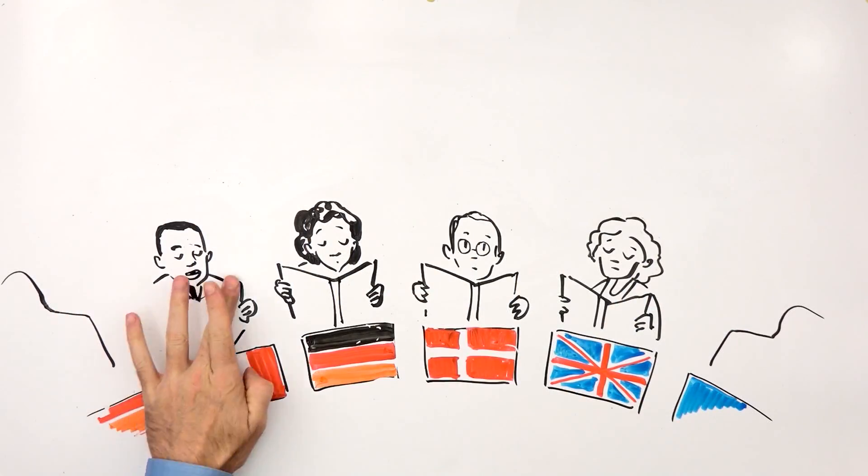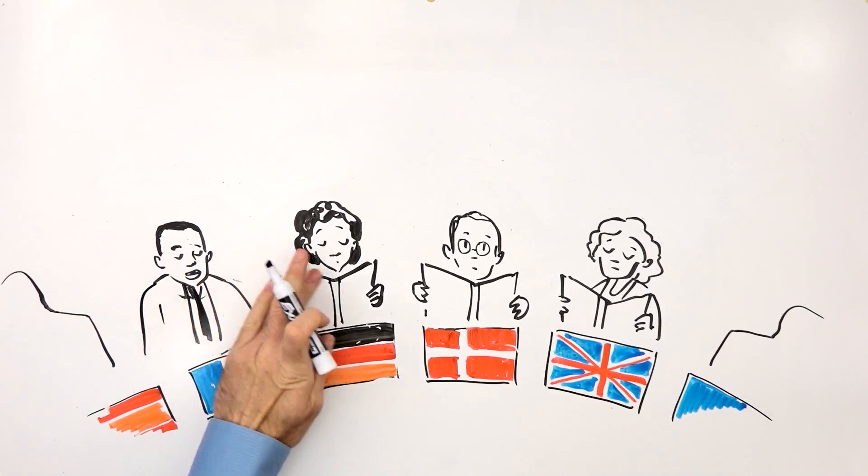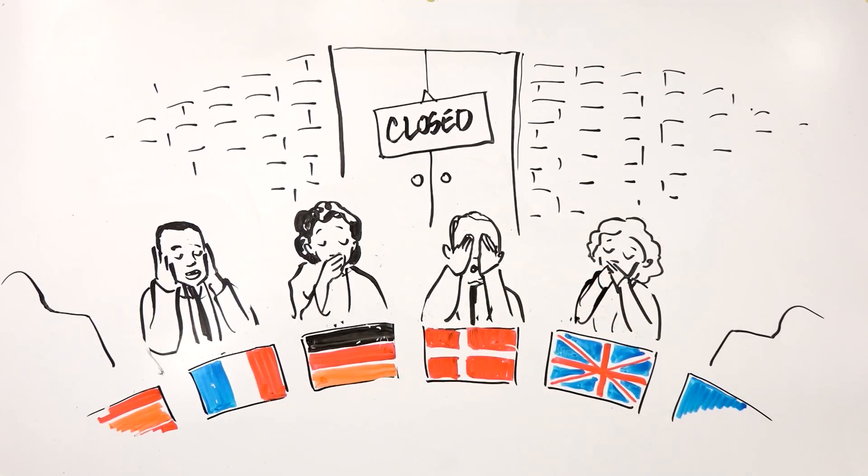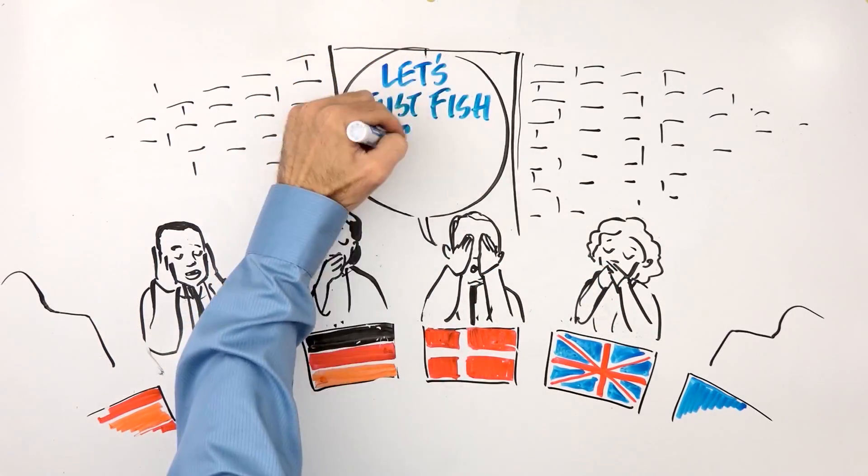While the law changed, ministers have been continuing to ignore the scientists' advice and setting quotas above advised limits, slowing down progress to end overfishing in the EU.